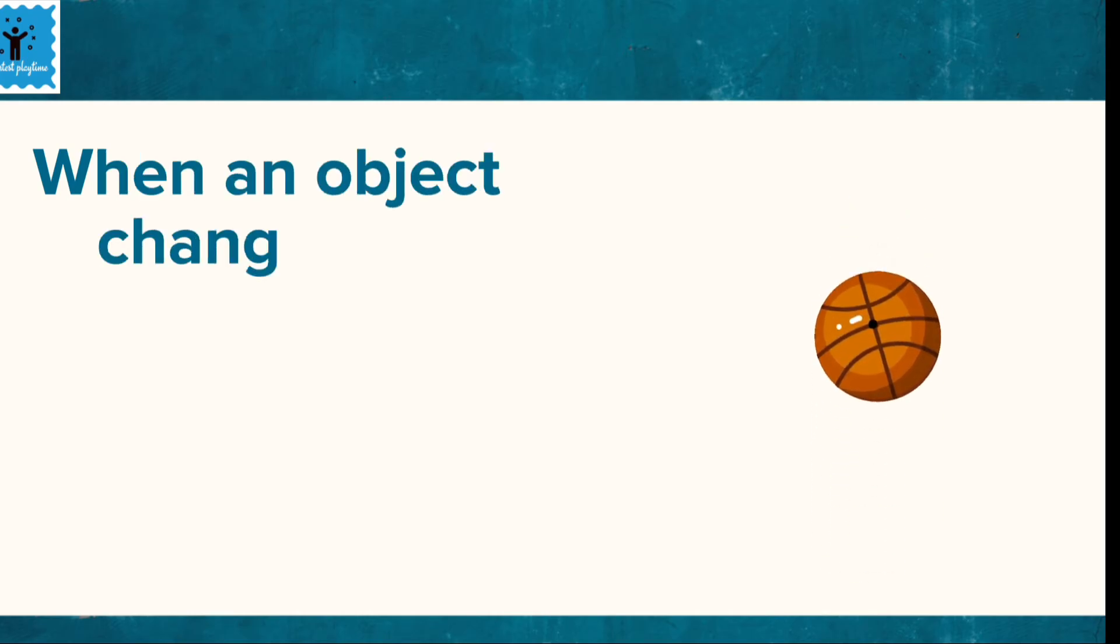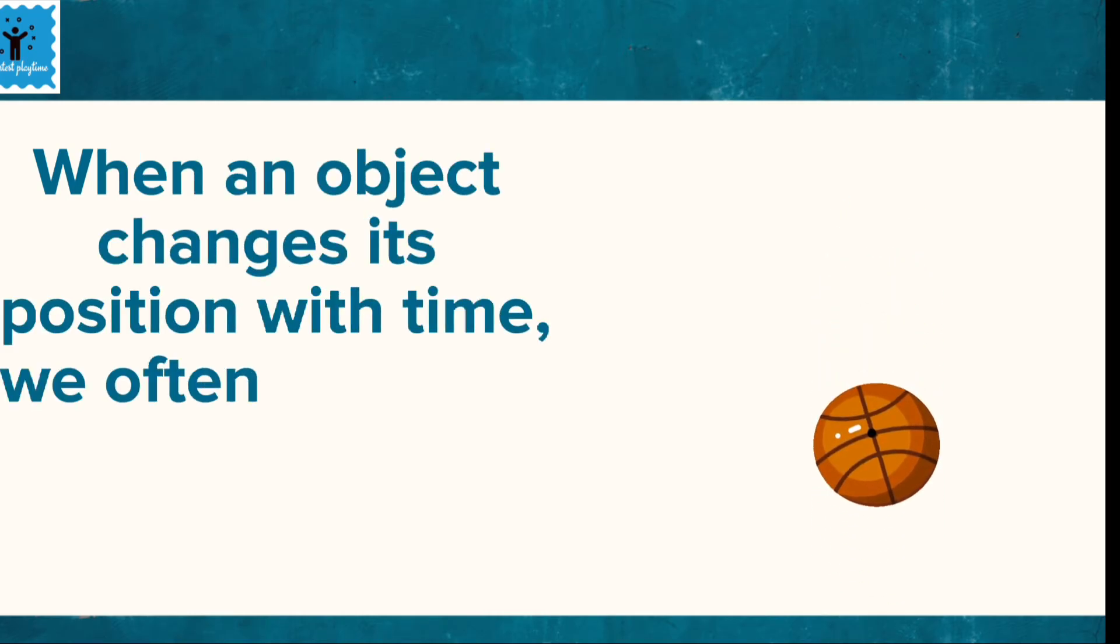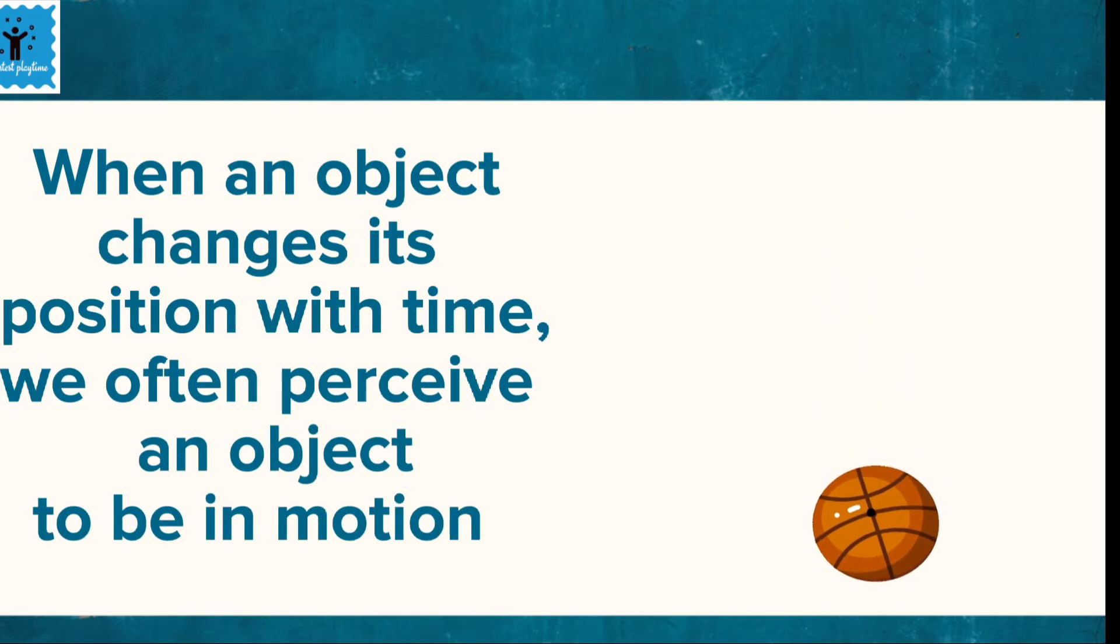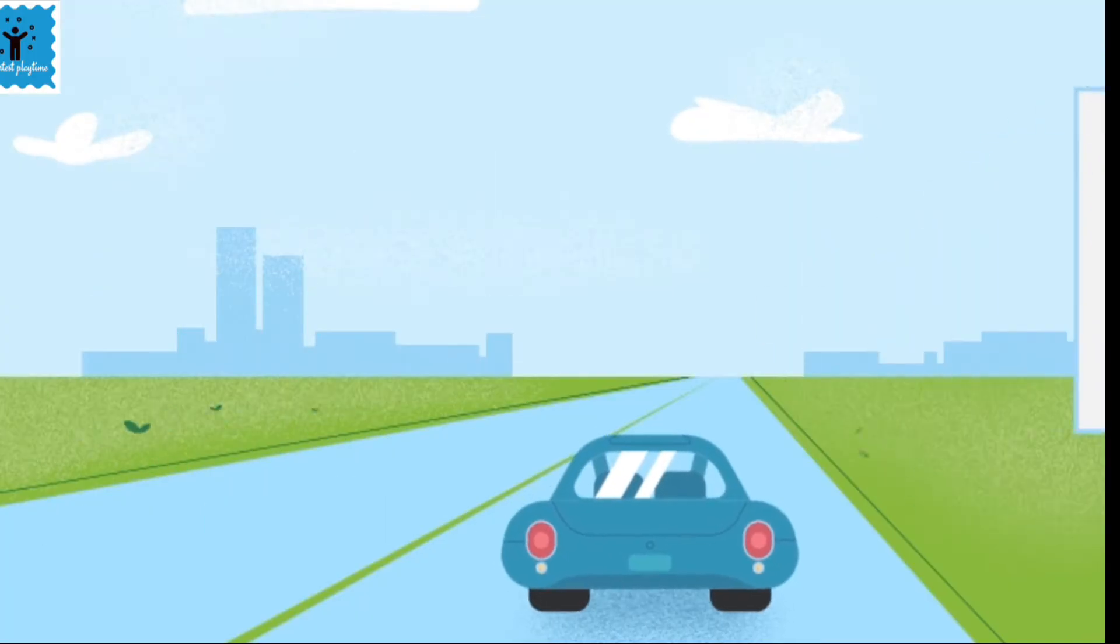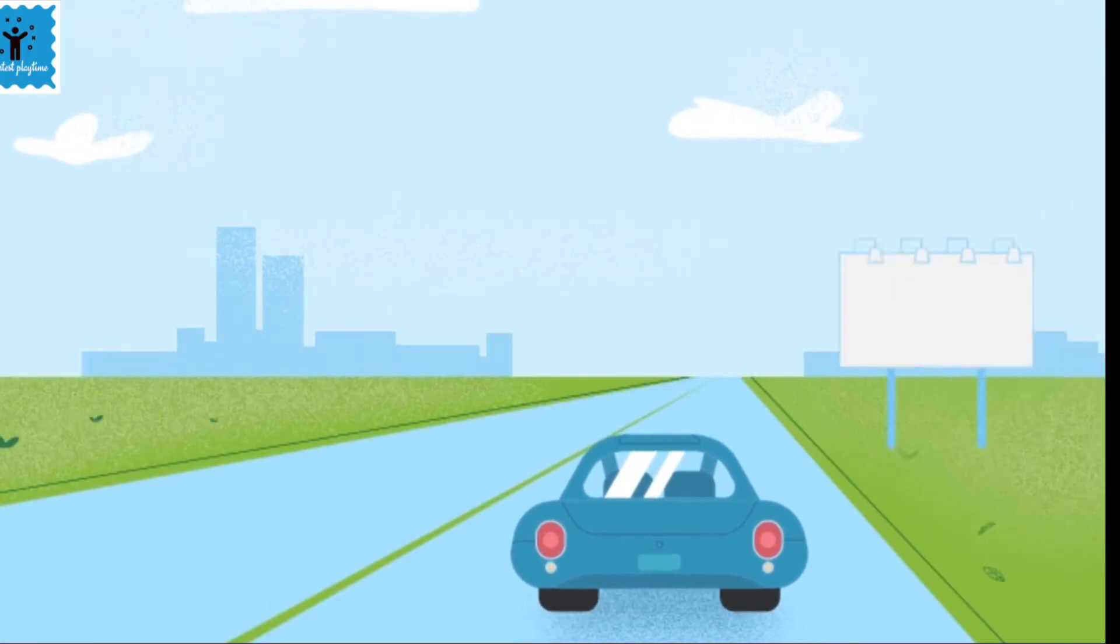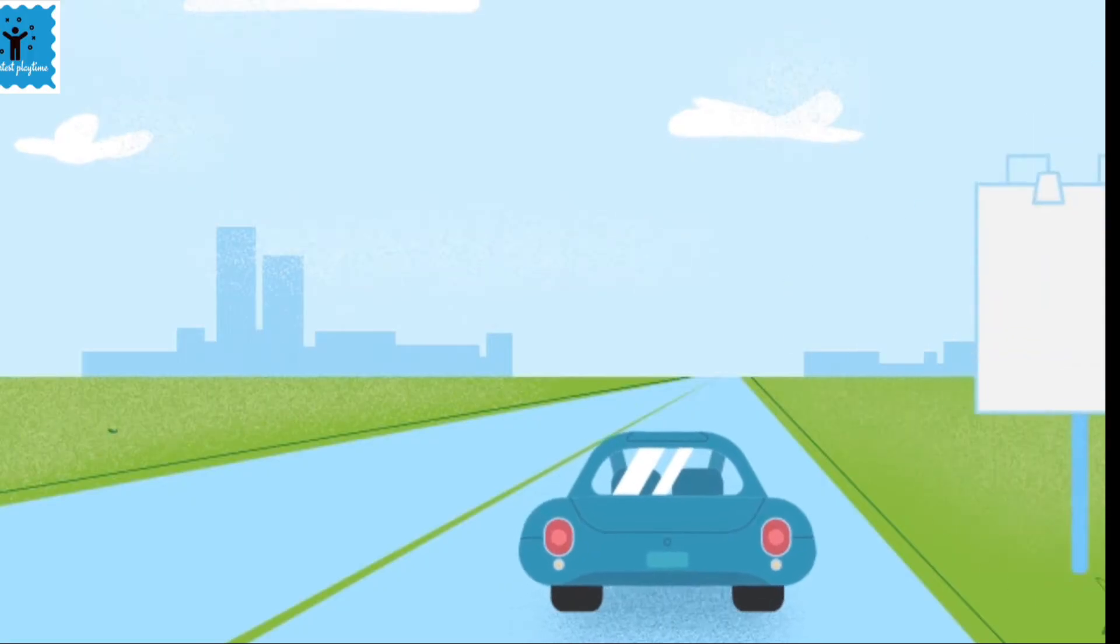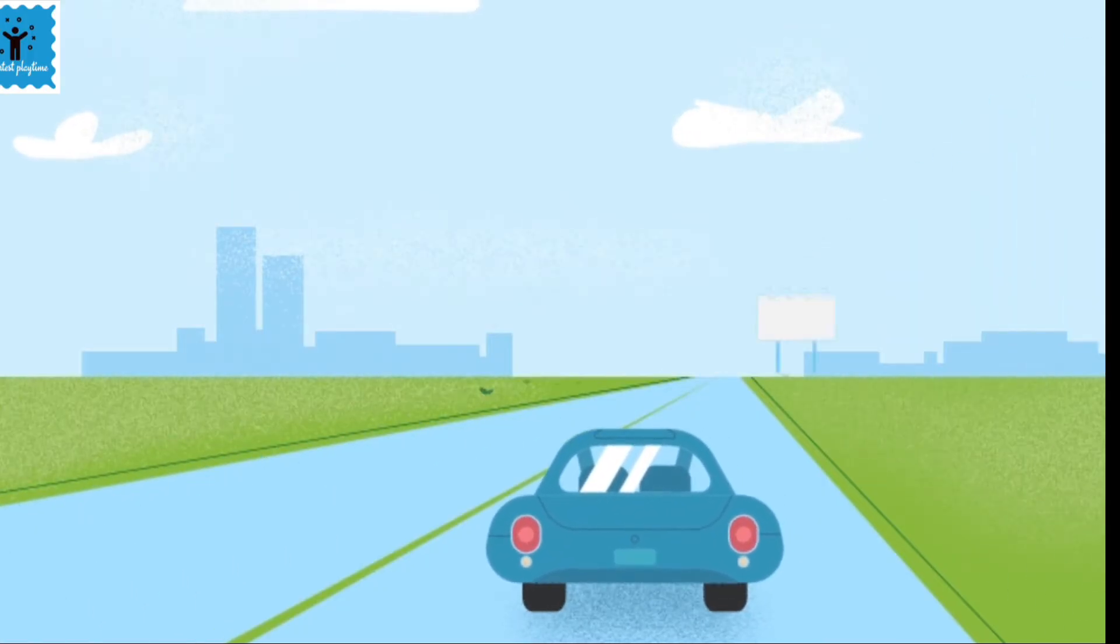When an object changes its position with time, it is said to be in motion. For example, here the position of the car is changing with time. We say that the car is moving or the car is in motion.